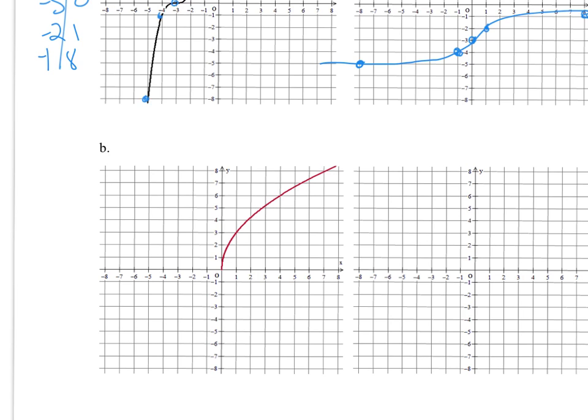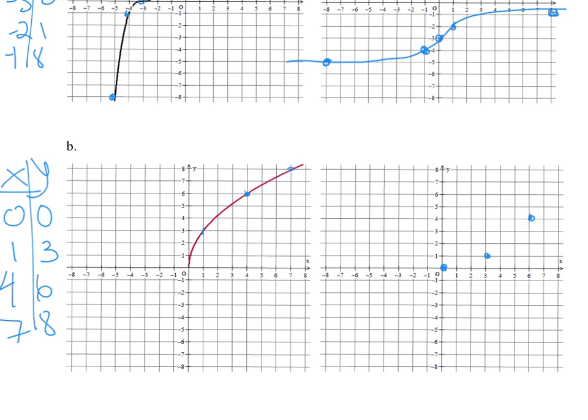Similarly for part b, the original function has points at (0, 0), (1, 3), (4, 6), and (7, 8). So the inverse has points at (0, 0), (3, 1), (6, 4), and (8, 7). And there's the graph.